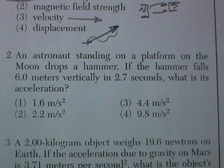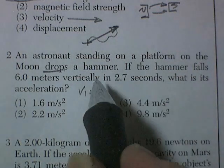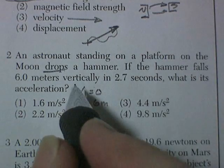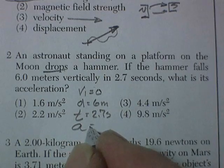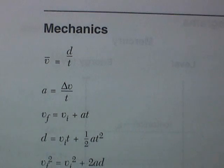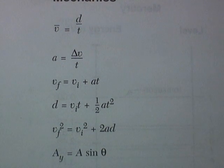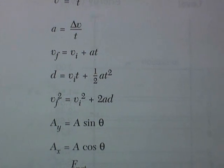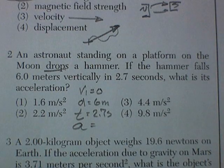Question 2: an astronaut standing on a platform on the moon drops a hammer. 'Drops' is a key word — it means initial velocity is equal to zero. The hammer falls 6 meters in a time of 2.7 seconds. What's the acceleration? We have our knowns and our unknown, so we go to the formula sheet. In the mechanics section we find: distance equals initial velocity times time plus one-half at squared. We have distance, initial velocity, and time, so we're looking for acceleration — that's the equation we need.